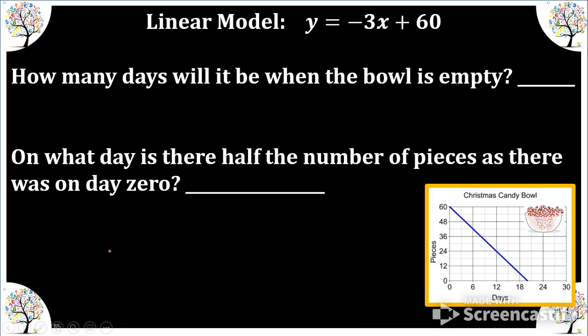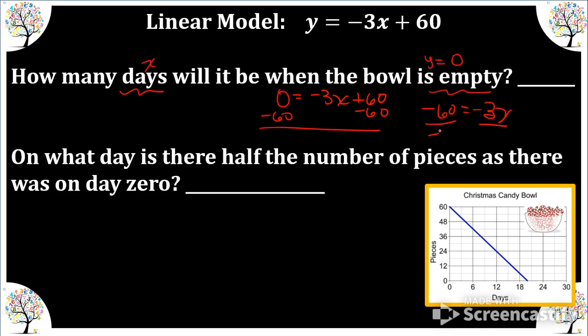So now we can answer some questions using our linear model. How many days, that's x, will it be when the bowl is empty? So the value for empty is zero. So when y is zero. So we're going to plug in zero for y and solve for x. We get negative sixty equals negative three x. Divide. And x is twenty. So twenty is this value right here. So our x-intercept.